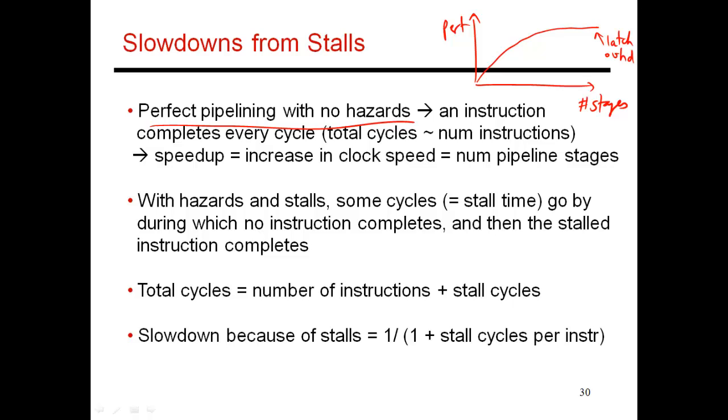And that gave you an IPC of one. And so my speedup over an unpipelined processor was a function of the number of pipeline stages, which corresponds to the increase in clock speed.